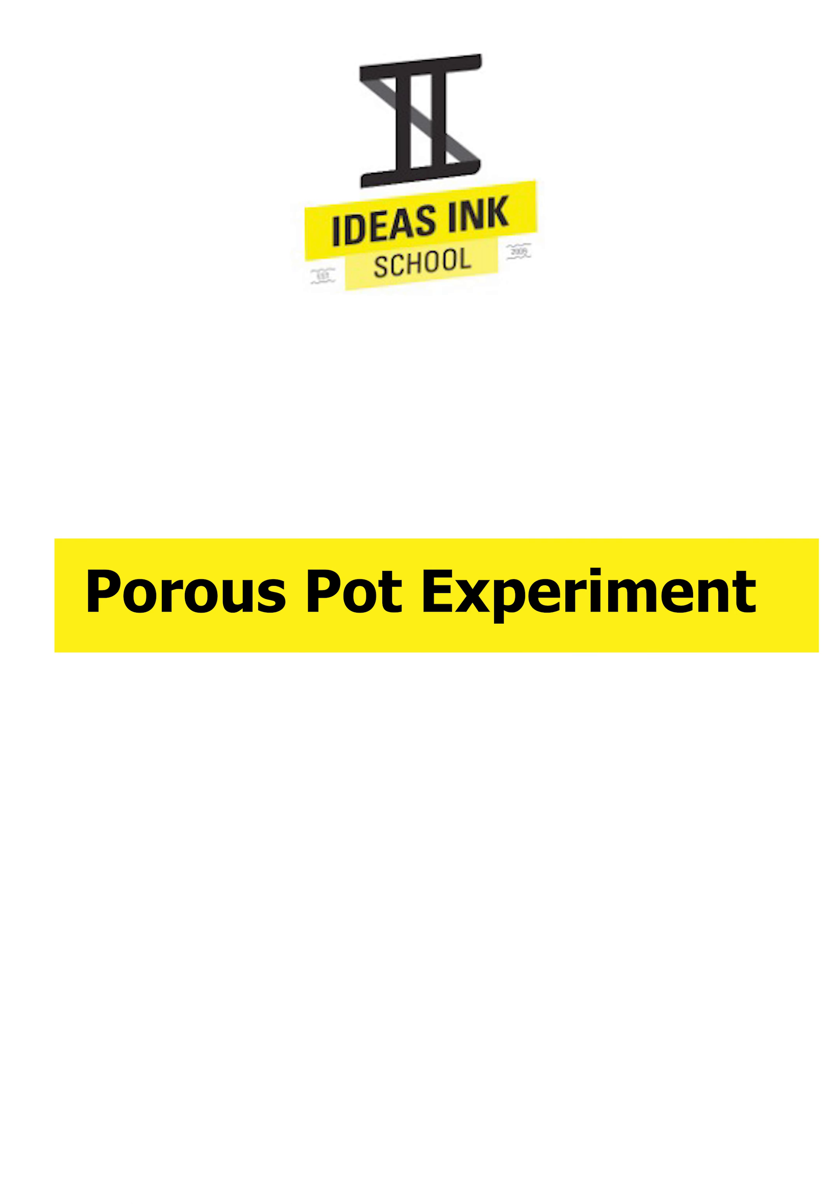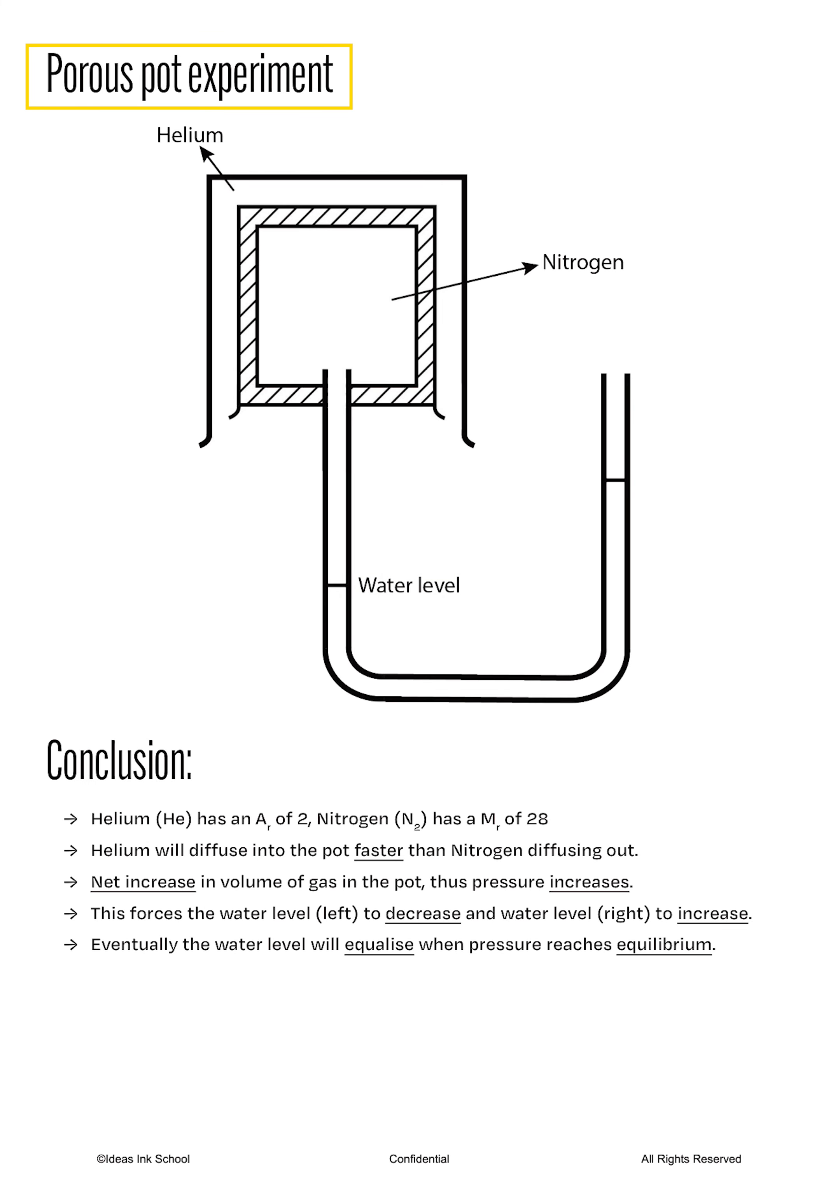In the last part of the chapter, we will be studying the porous pot experiment. Please pause the audio and study the diagram in the notes. Let's begin. The inner pot is made of a porous material to allow gaseous exchange. This pot contains nitrogen gas and is surrounded by a larger external container that is filled with helium gas. Helium has an atomic mass of 2, while nitrogen has a much higher molecular mass of 28.